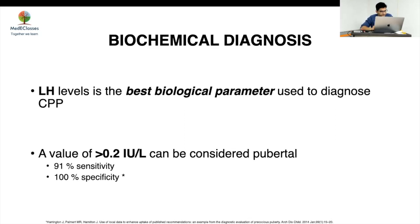What does it mean if somebody has an LH of 0.3? We need to look at the clinical picture as well. If it is more than 0.2, you can be 100% sure it is central. If it is less than 0.2, 9% of cases with CPP may still have an LH less than 0.2 — that is what the 91% sensitivity means. So in that setting you need to proceed further.